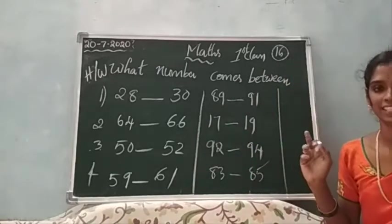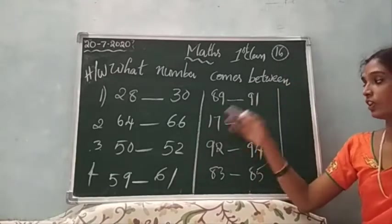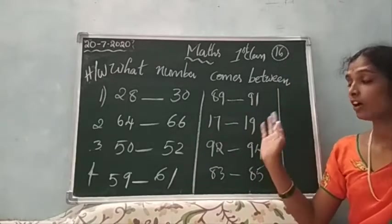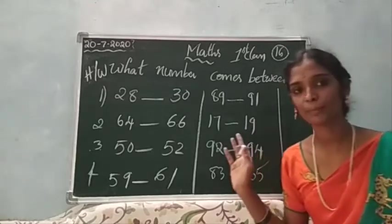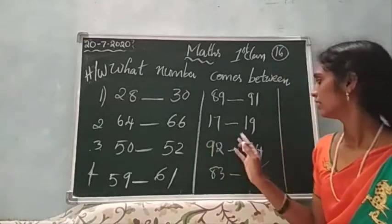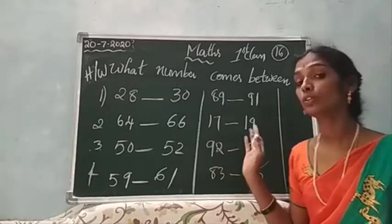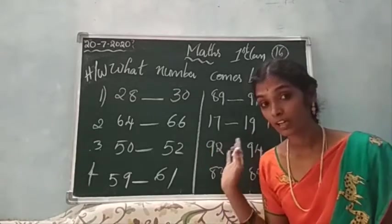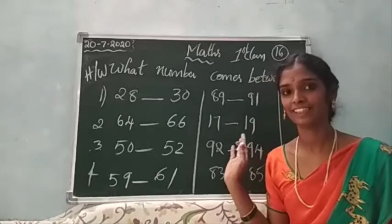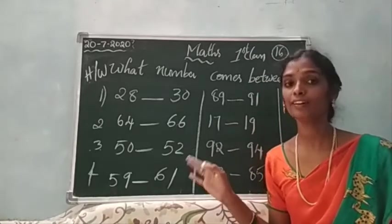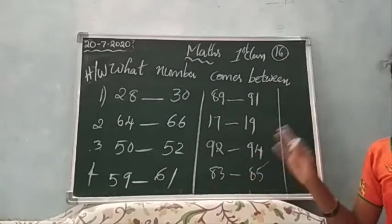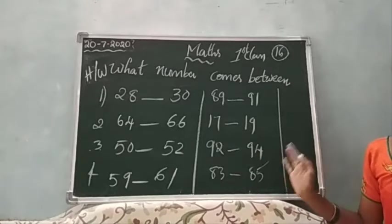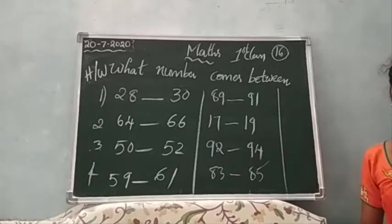The number is 90. 17 after the number — 18. 19 before the number — also 18. 92 after the number — 93. 94 before the number — 93. 83 after number — 84. 85 before the number — 84.